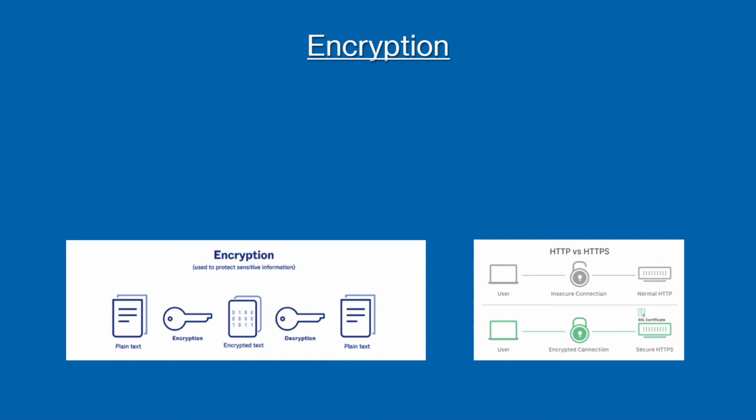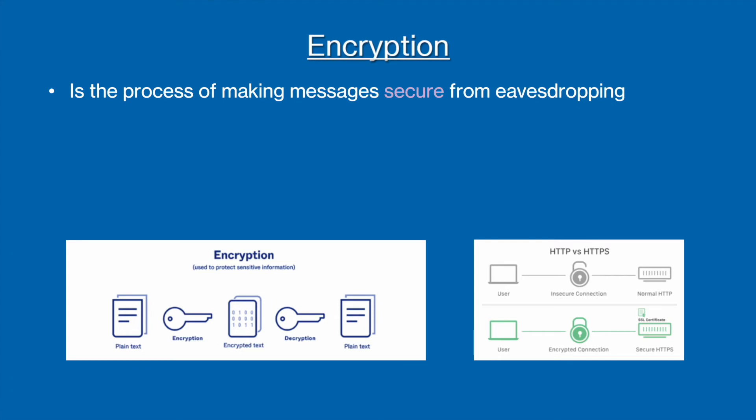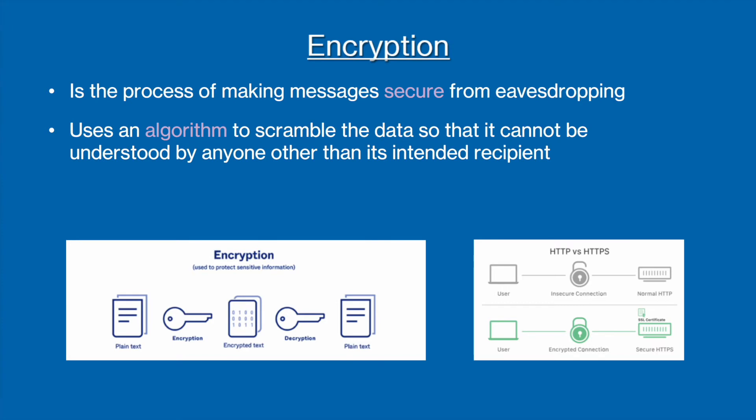Next we have encryption. We know that any message sent over a network can be intercepted. To protect sensitive information from being accessed this way, encryption is used to change the original numbers and characters so that they are hidden or disguised. This is done using an algorithm, and means that even if the data is intercepted, it can only be decrypted and understood using something we call a key.